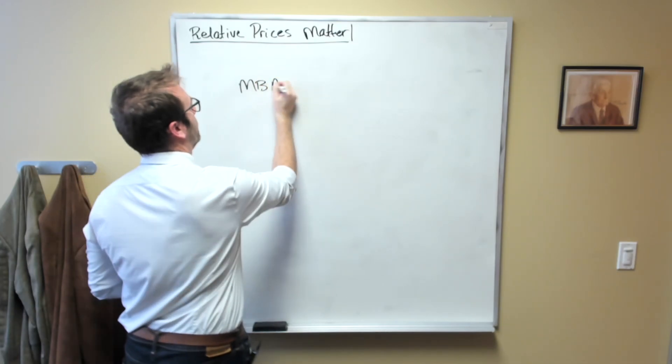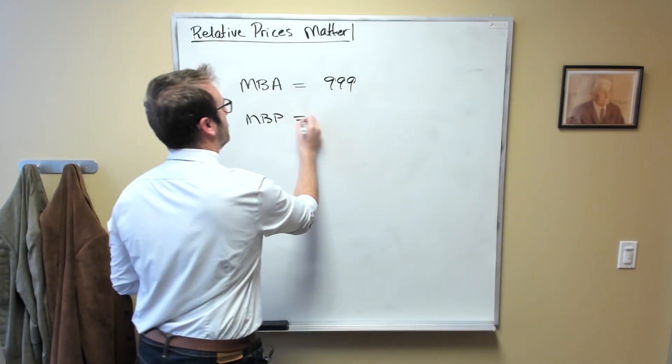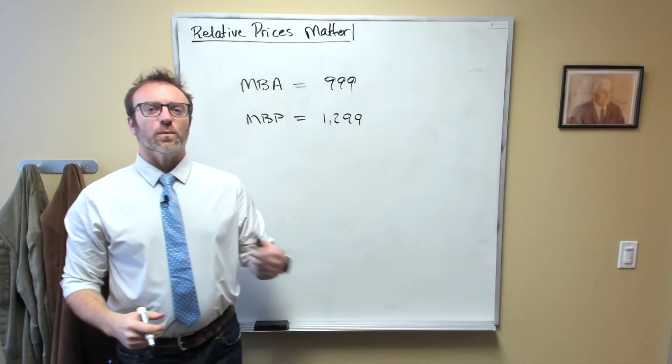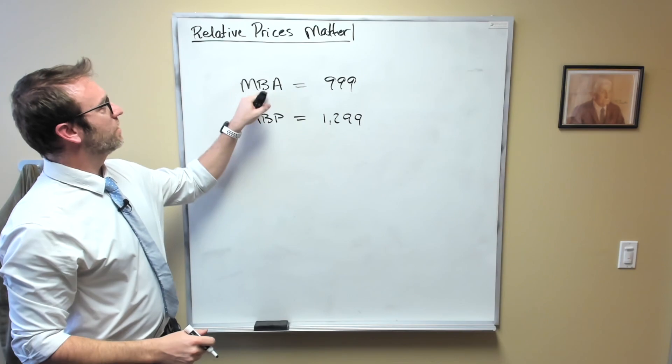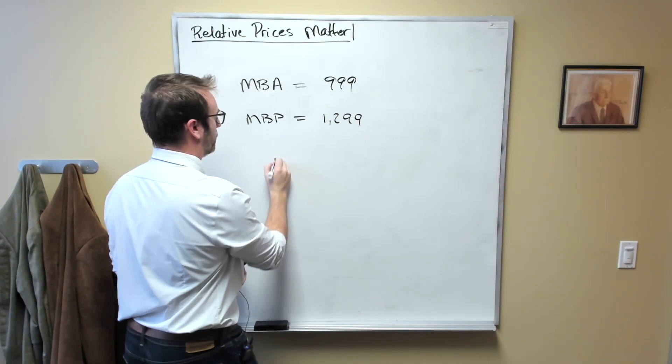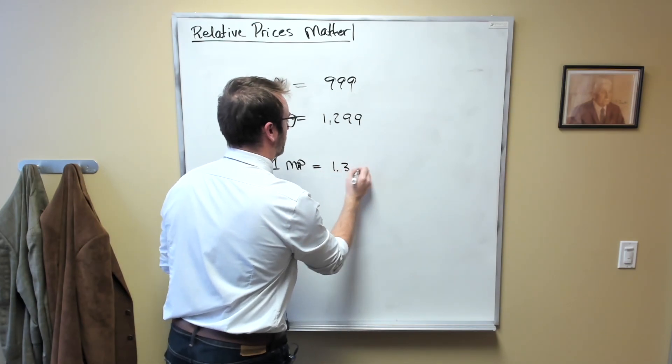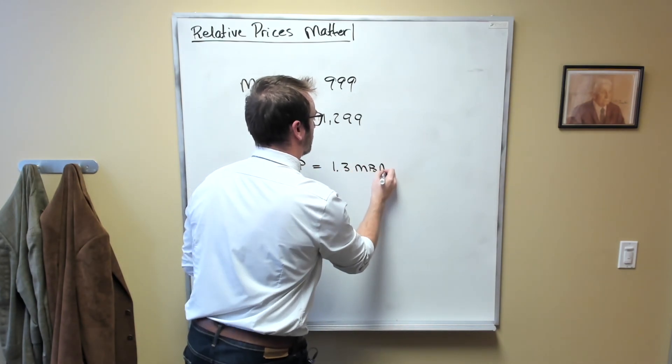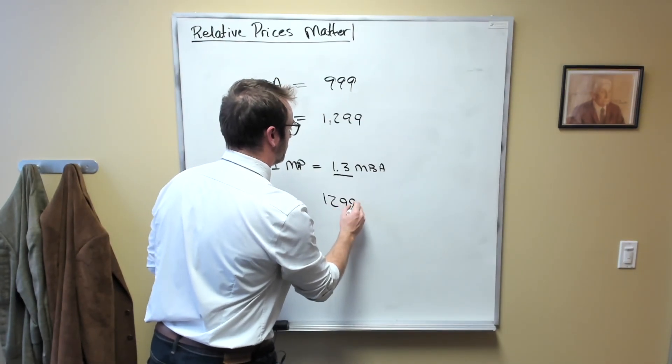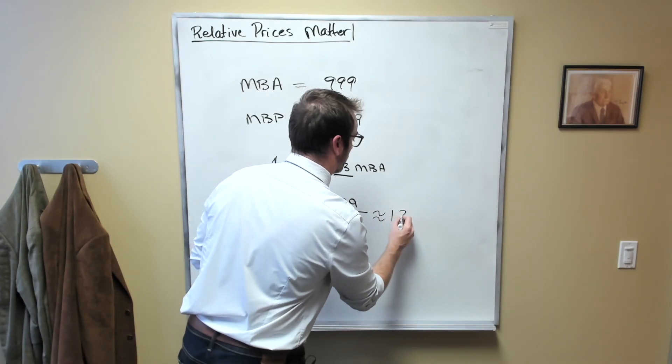The MacBook Air is $999 and the MacBook Pro is $1,299. The relative price of the MacBook Pro in terms of MacBook Airs is approximately 1.3, so 1 MacBook Pro equals 1.3 MacBook Airs. I got that number by dividing $1,299 by $999, which is approximately equal to 1.3.